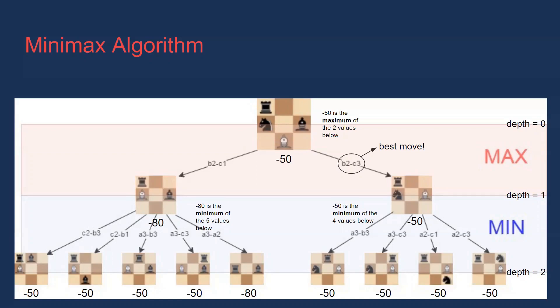Next, at depth equals zero, it is white's turn, which means we want to pick a maximum. The maximum value between negative 50 and negative 80 is negative 50, so it gets passed up the tree. This is where the value at the top of the screen came from. Now we know that the best move in our current situation would be to move the bishop up and to the right because it has the potential to lead to the most valuable game state after looking two moves ahead. With all that said, we can finally start coding the algorithm.